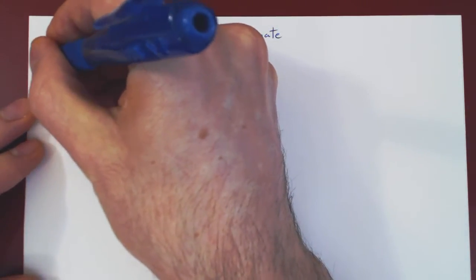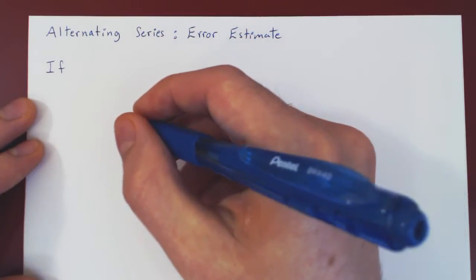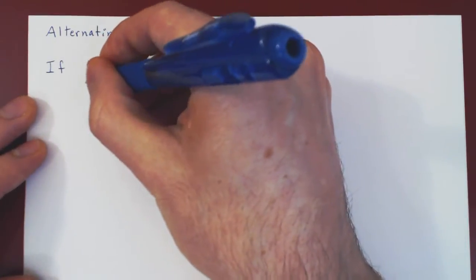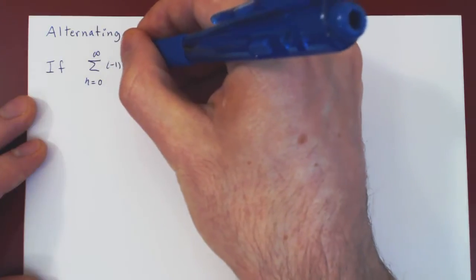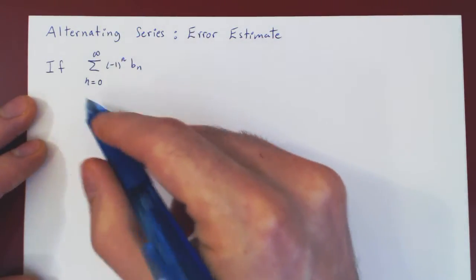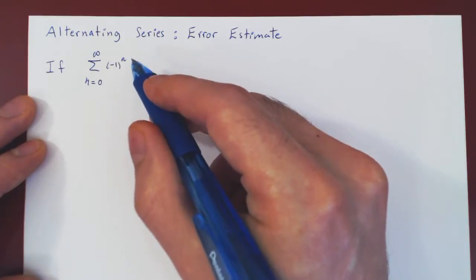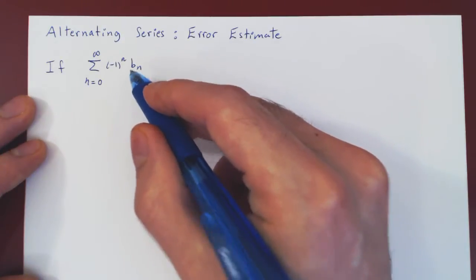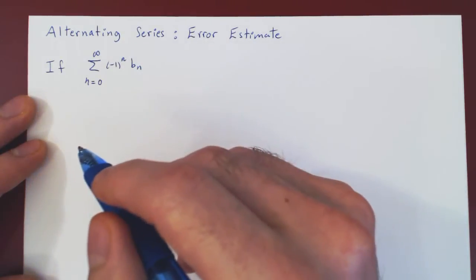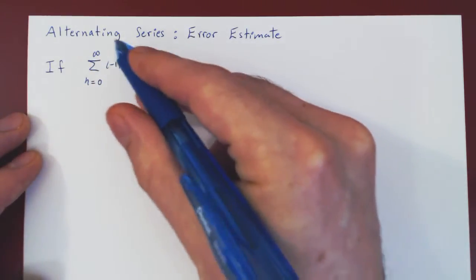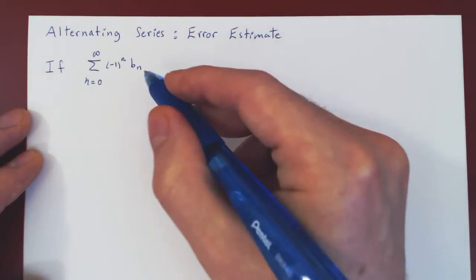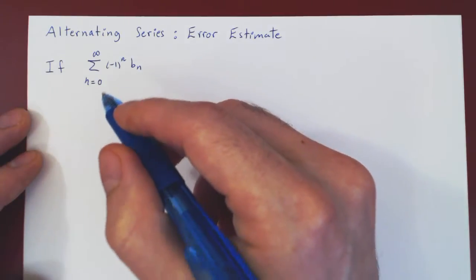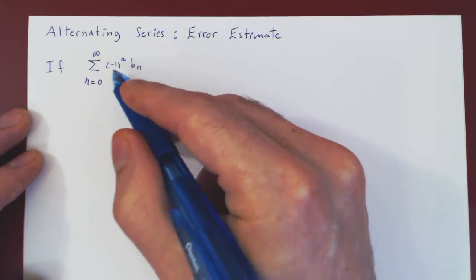So here's the assumption. We assume that we have a converging alternating series. So the sum from 0 to infinity, negative 1 to the n times bn. And recall that given an alternating series where bn is a positive sequence, all it takes for the series to converge is that bn eventually decreases, and in the limit as n approaches infinity, bn must converge to 0. Given these conditions, the alternating series converges. So we'll assume here that the sequence bn satisfies these conditions, and so the series that is now an alternating series converges.